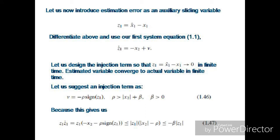Let us introduce the estimation error as an auxiliary sliding variable: Z1 = x1-hat − x1. Differentiating this equation and using the definition of the observer injection term and the system equation, we get the time derivative of Z1 equal to −x2 + nu. Let us design the injection term nu so that Z1 converges to 0 in a finite amount of time, meaning the estimated variable converges to the actual variable in finite time.